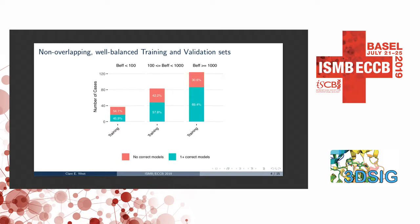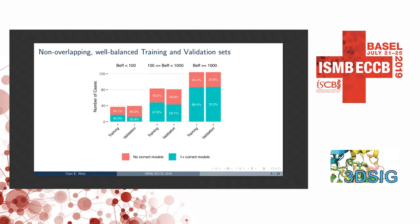The first thing we did was generate a training and validation set — two non-overlapping sets of 244 targets based on PFAM. We ensured these were well-balanced in terms of features that have an impact on our performance, such as the number of effective sequences, as well as the length and the SCOP class of the targets. From the training data, when we generate 500 models using SAINT2, the blue ones are targets for which we get at least one correct model, and the red ones are those for which we didn't. When we have a small number of effective sequences, these are harder targets and we perform less well. It was really important to make sure the distribution of features is well-balanced between training and validation so we don't overestimate or underestimate how our method is performing.